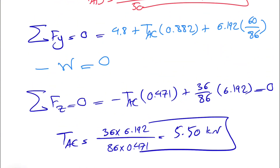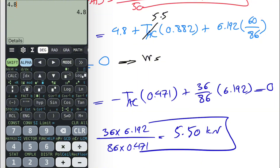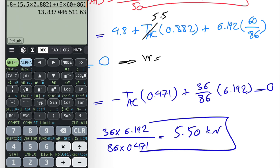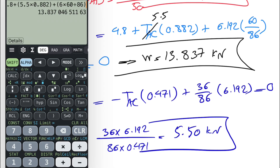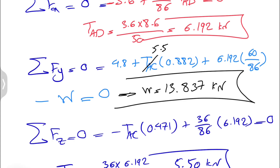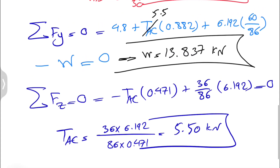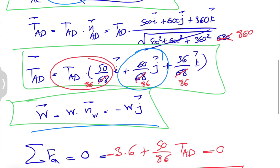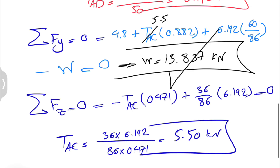Now substituting back into the Y equation to find W: W equals 4.8 plus 5.5 times 0.882 plus 6.192 times 60/86, which gives W = 13.837 kilonewtons. That's the final answer. This is a long but very common question in midterms — watch every single step carefully. I made a mistake writing 680 instead of 860, which would mess up the answer. Take care and see you in the next one.